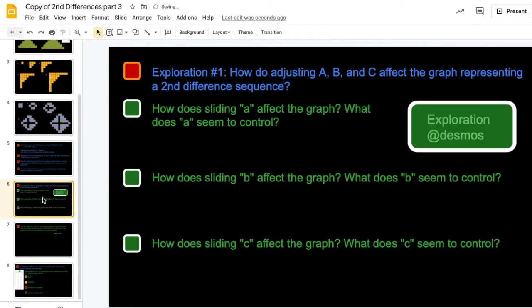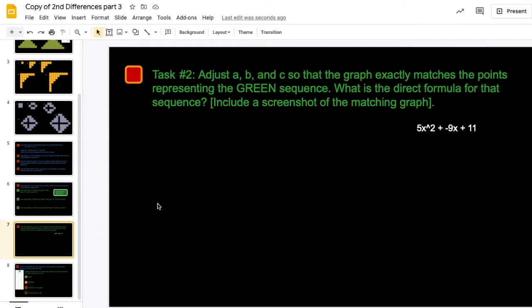All right, so slide 6, figure out what a, b, and c, adjusting them, see what it does to the graph. Slide 7, adjust to get your curve to line up with your points. Get me an equation and a picture.